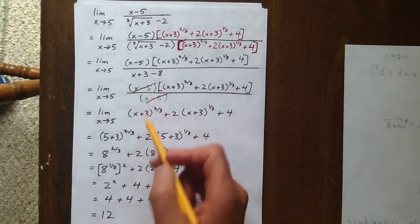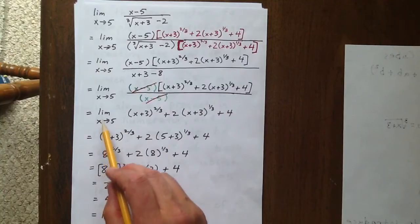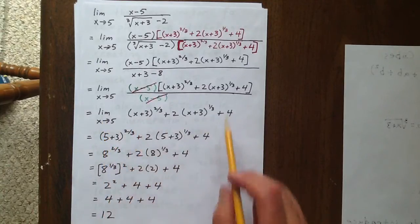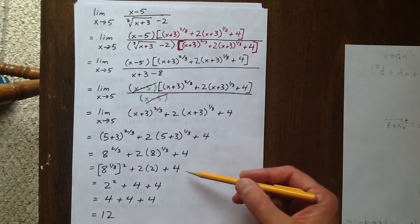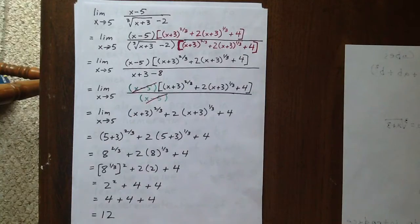We can cross those out now. And we're left with the limit as x goes to 5 of this expression. We can substitute an x value of 5 in with no problem. And doing that leads to our ultimate answer of 12.